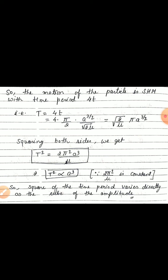The time period is denoted by capital T, so T = 4t. Substituting the value of small t, T = 4 · (π/2) · a^(3/2) / √(2μ) = π√(2/μ) · a^(3/2). Squaring both sides gives T² = 2π²a³/μ, so T² is proportional to a³ since 2π²/μ is constant. Therefore, the square of the time period varies directly as the cube of the amplitude. In the next lecture, numerical problems on SHM and Hooke's law will be discussed.